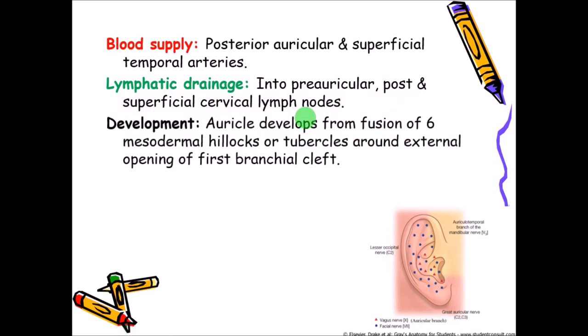Regarding development of the auricle itself: the auricle develops from the fusion of six mesodermal hillocks or tubercles around the external opening of the first branchial or pharyngeal cleft. These mesodermal hillocks join together to form the pinna or auricle. This will be dealt with in detail when we study the development of the ear.